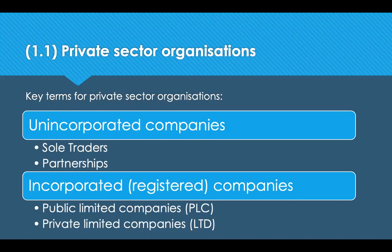There are two main types of private sector companies: incorporated or unincorporated. Incorporated companies are registered at Companies House and are considered to be a separate legal entity from their owners, meaning the owners are not responsible for any debt. Unincorporated companies, by contrast, do have liabilities — sole traders and partnerships can get into debt, and that debt is then the responsibility of the individuals to pay.